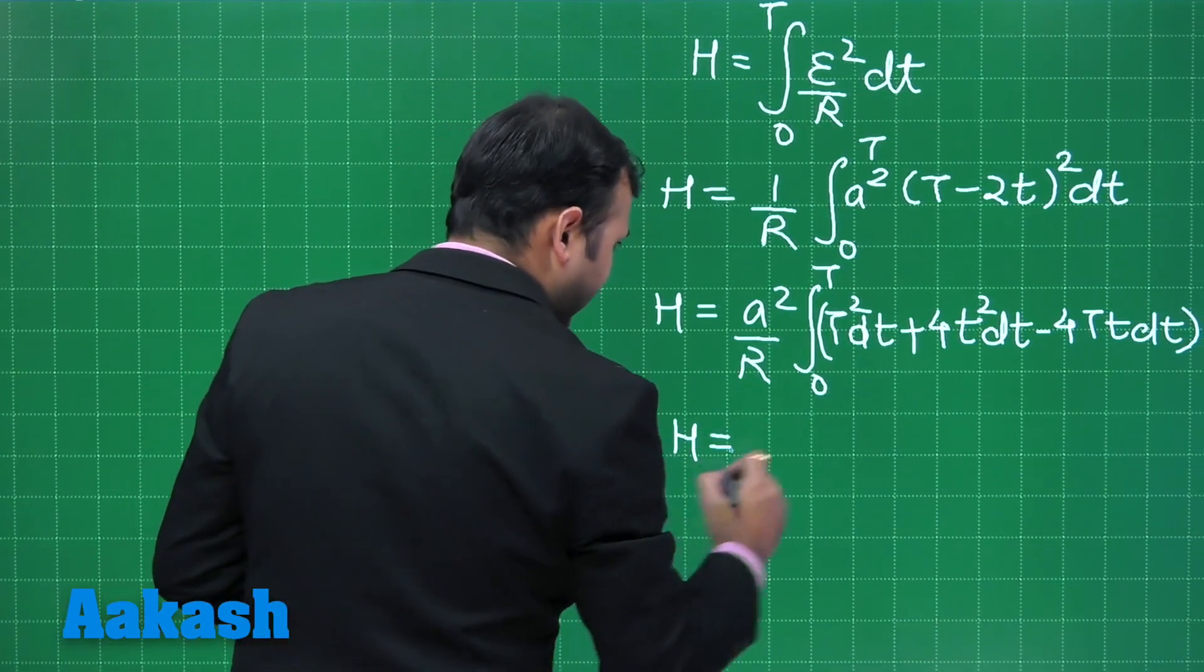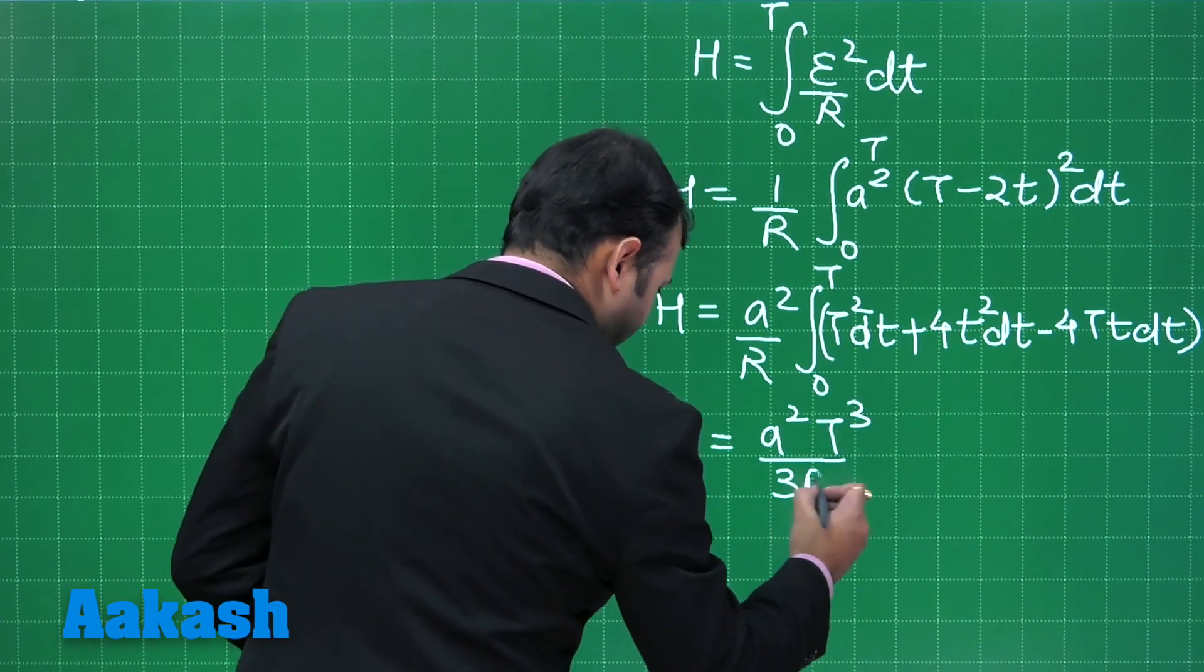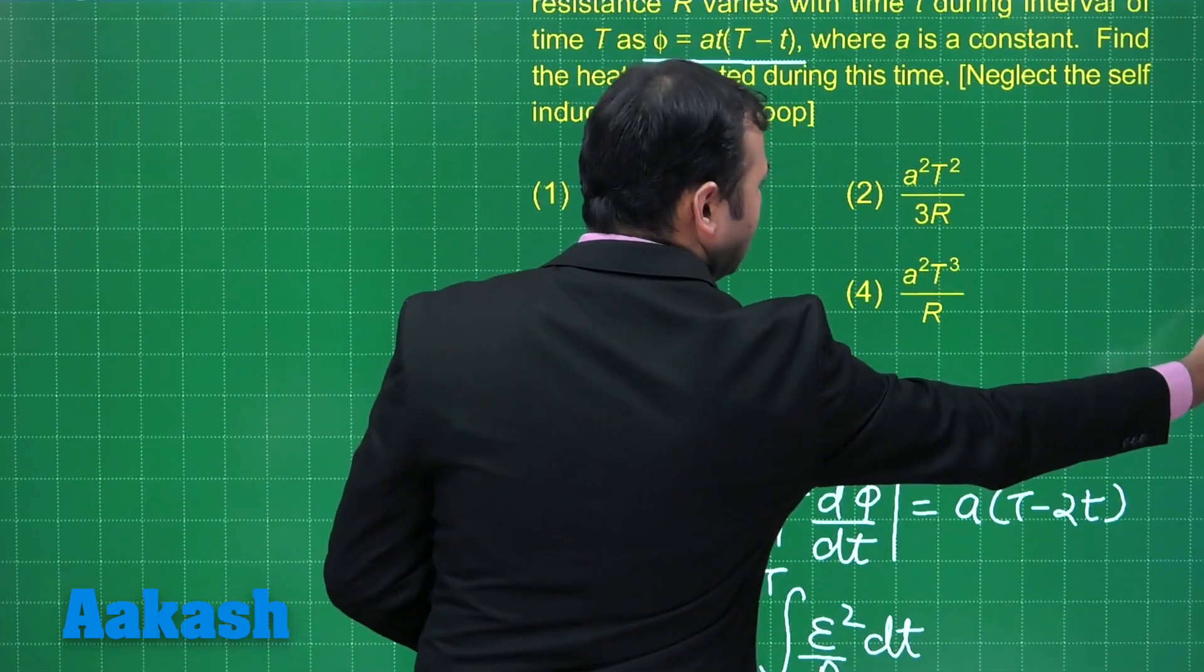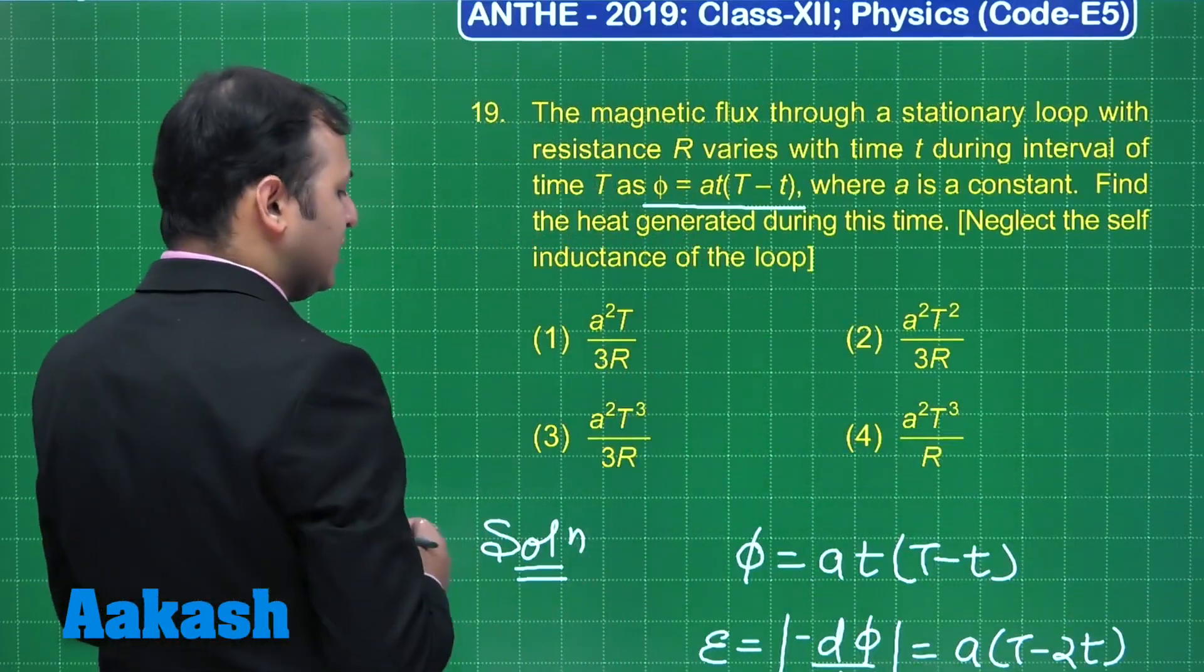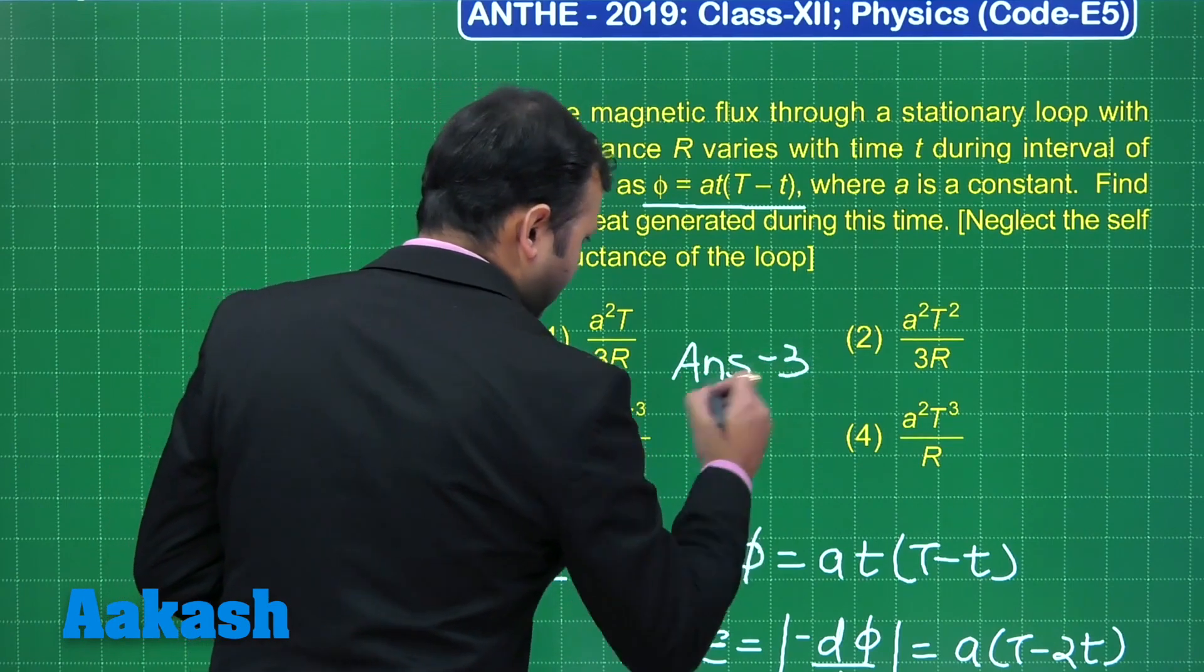When you solve this, you will get A square T cube upon 3R, right? Let us see which is the best suited option. So, among the 4 options given to us, yes, option number 3 is the correct answer to this question.